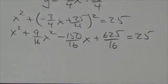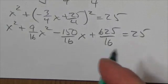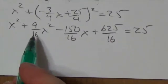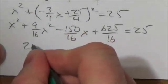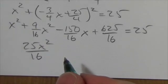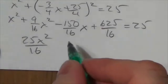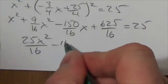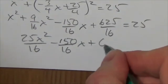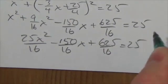Okay, now next thing we're going to do is group together like terms here and add things up. So what we've got is x squared and 9 sixteenths x squared. Well, okay, that's going to give me 25 x squared over 16. Okay, then we've got this negative 150 over 16 x plus 625 over 16 equals 25.